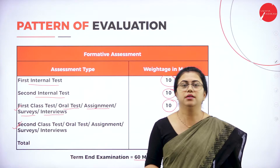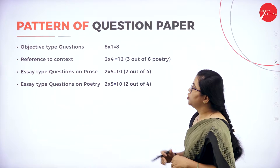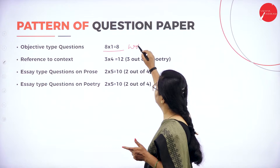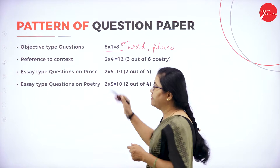Let's look at the pattern of the question paper. You'll have objective type questions — that is one-word answers, not MCQ, but one word or a phrase. Phrase is a group of words, so one word or one phrase. That section is for 8 marks. There will be options — 15 questions will be given and you have to answer any 8.